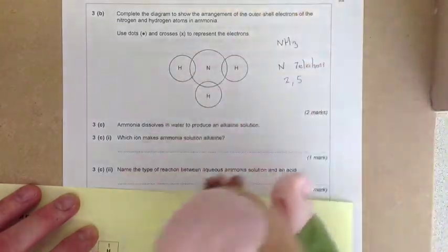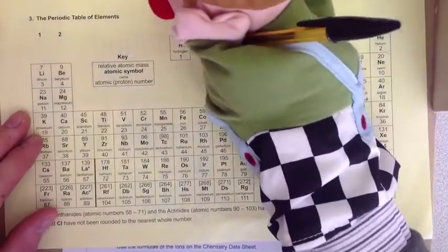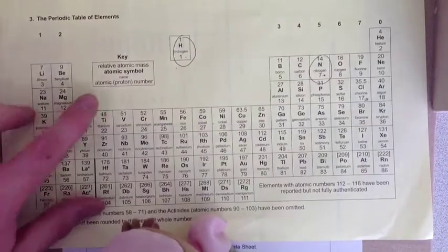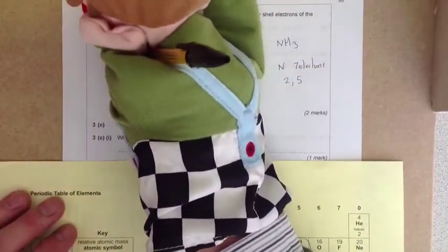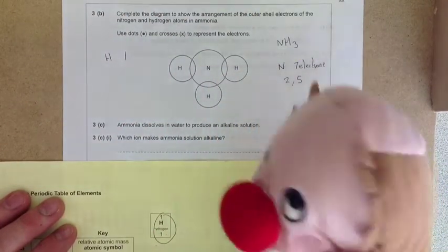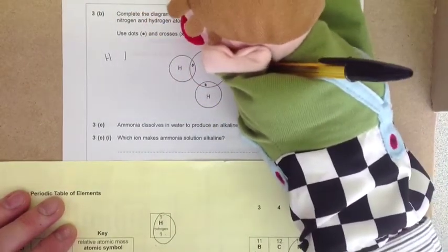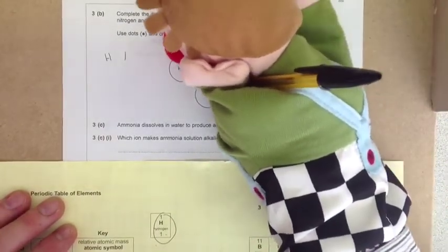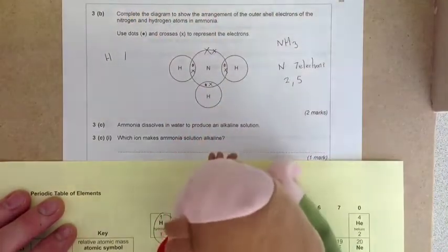In the first shell, only two electrons. The second shell can hold a maximum of 8, but we've only got 5 left. Hydrogen has atomic number 1, so one electron. We'll put dots for hydrogen and crosses for nitrogen - 1, 2, 3, 4, 5. You have three bonding pairs and one lone pair.